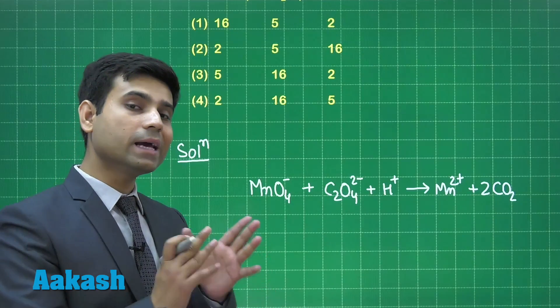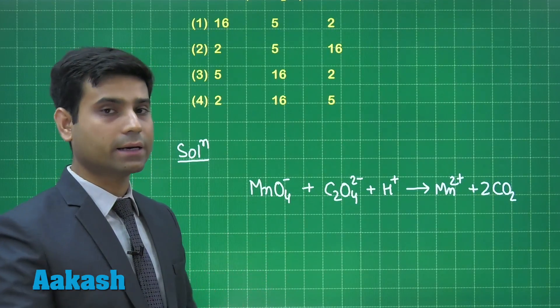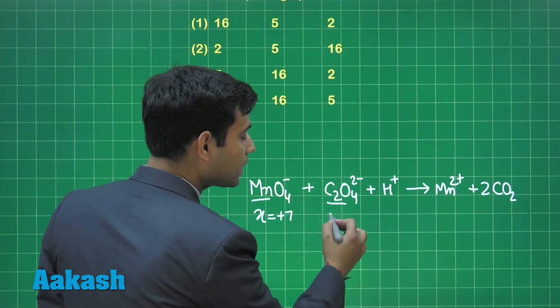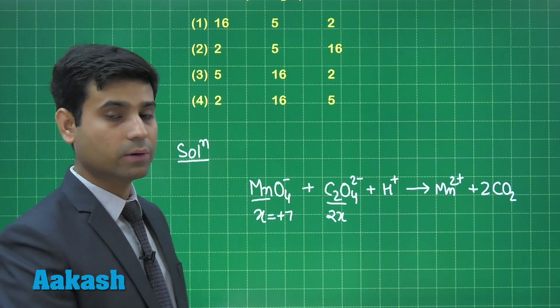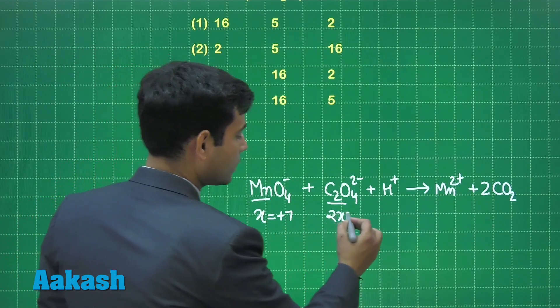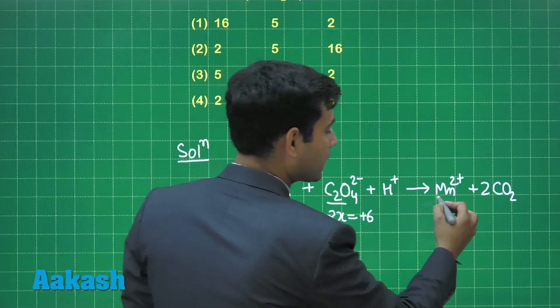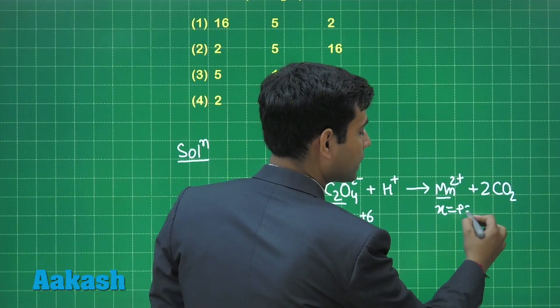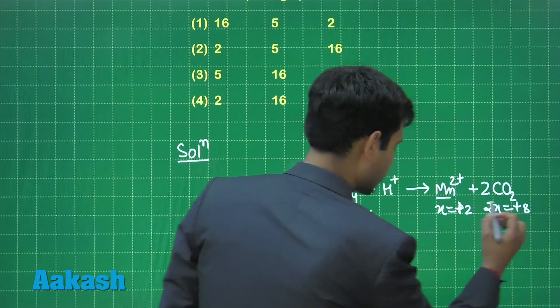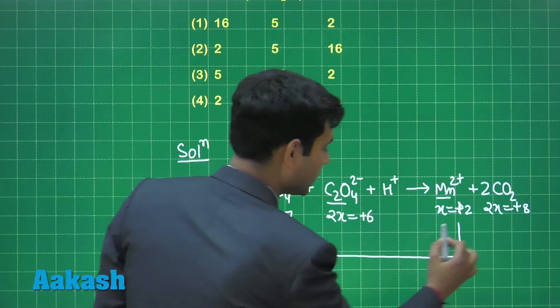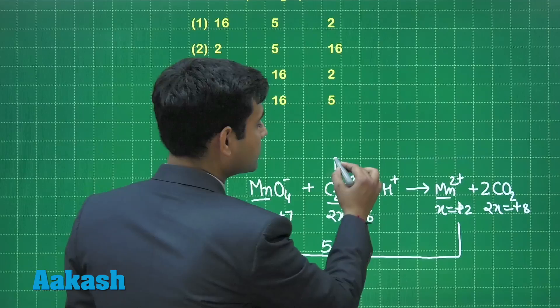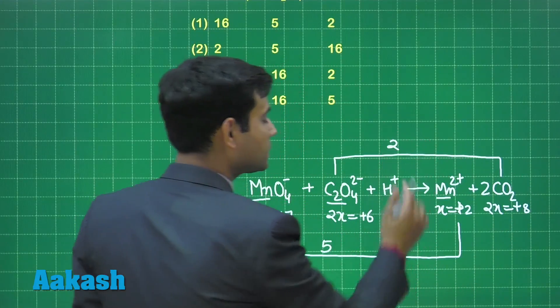Now let's find the net change in the oxidation state of the reactants. The oxidation state of manganese here is plus 7. Now the change in oxidation state here is 5. So oxidation number decreases by 5 where the change in oxidation state here is 2. So oxidation number changes by 2.